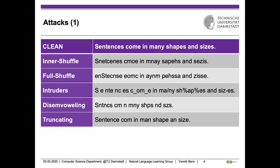The first attacker is the inner shuffle attacker. It shuffles the inner characters of each word while the first and last letter remain untouched. This attack builds on the human ability to still comprehend words if the first and last letter remain intact. The second attack is the full shuffle attack — the extreme case of the inner shuffle perturbation where the constraint on initial and final letters is dropped. We include this attack for completeness, even though we do not assume high degrees of human robustness to it.